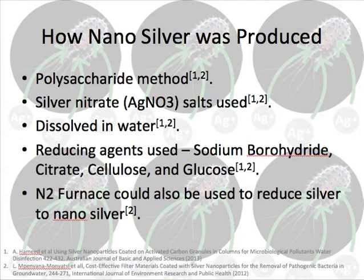There are various methods of producing nanosilver. However, the most common method is the polysaccharide method. Here, silver salts such as silver nitrate are used. They are dissolved in water and reducing agents — polysaccharides or polymer carbohydrates — are used. Some common ones are sodium borohydride, citrate, cellulose, and glucose.